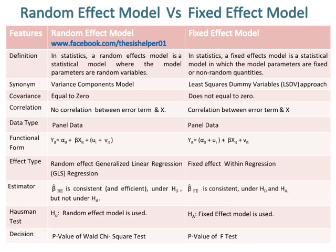The data type of both the Random Effect Model and the Fixed Effect Model is Panel Data. The effect type of the Random Effect Model is Random Effect Generalized Linear Regression (GLS), whereas the effect type of the Fixed Effect Model is Fixed Effect Within Regression.